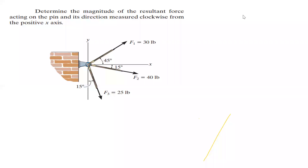Let's continue. This question was also one of the exercises: determine the magnitude of the resultant force acting on the pin and its direction measured clockwise from the positive x-axis. This is a straightforward question — it's essentially first-year physics rather than a second-year engineering problem. You just need to find the components of these forces, either using Cartesian vectors or normal scalar components.